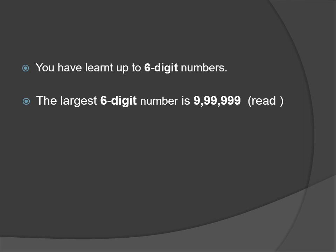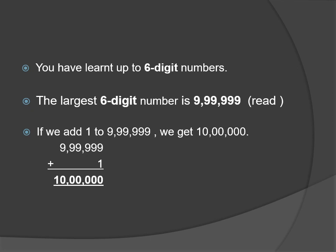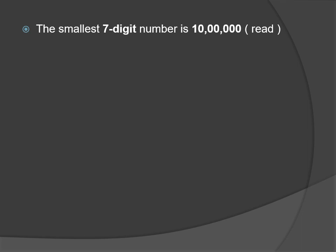The largest six-digit number is 9,99,999. If you add one to this number, we get 10 lakh — the number 10 along with five zeros. This 10 lakh is the smallest seven-digit number.